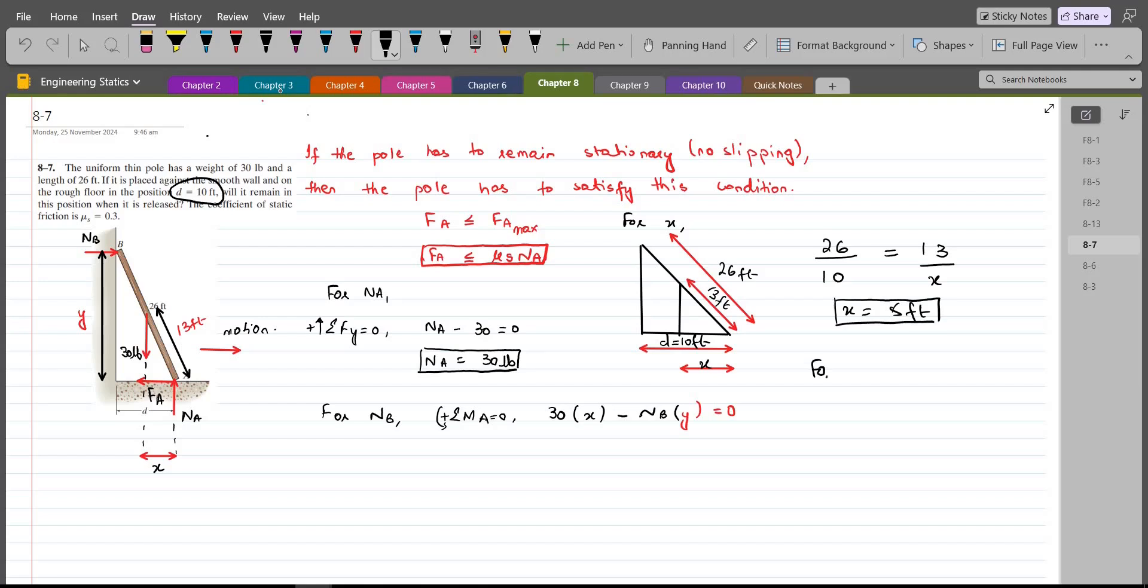And now for y. For y, we just have to consider the larger triangle. Because the height of the larger triangle is y feet. So, we can use the Pythagorean theorem here. So, we have the hypotenuse square for the larger triangle equals to the opposite square which is y plus the base square which is the distance 10 feet. So, from here y comes out to be 24 feet.